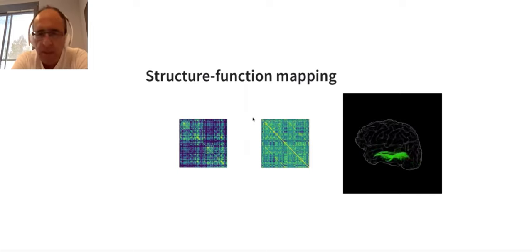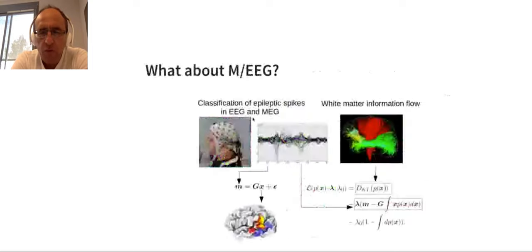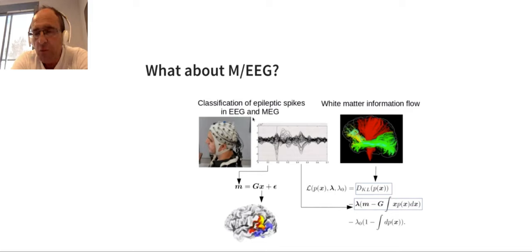My second question is about your minimization problem. You are minimizing the Kullback-Leiber divergence with two constraints. One, which is natural, which is a normalization, and the second, which basically constrains the first-order moment. My question would be, what happens if—is it reasonable or relevant to consider also second-order moments in the minimization procedure, because they are related to some correlation?